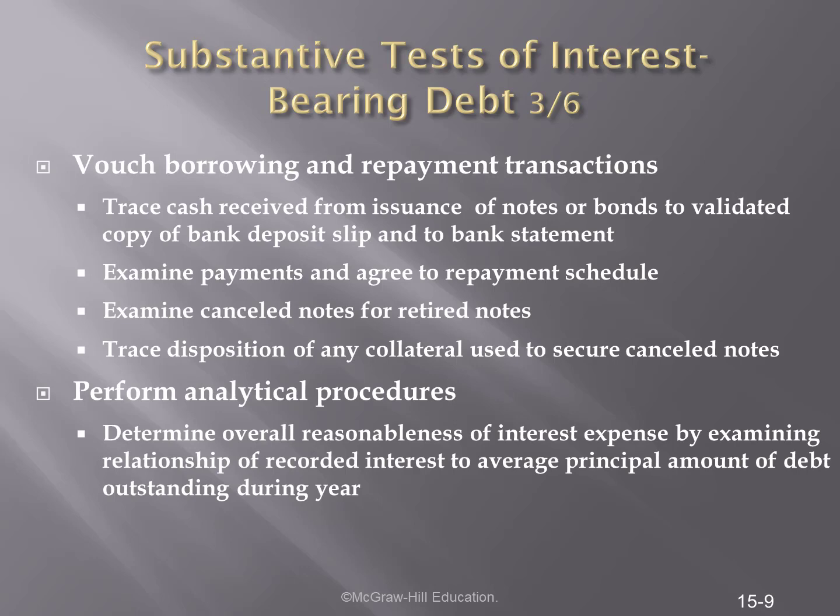We need to trace the disposition of any collateral used to secure these canceled notes. Performing analytical procedures, we're going to calculate, based upon the terms of the bond, the amortization table related to principal, interest, premium, and discount. This is going to be the basis for our audit of these transactions.